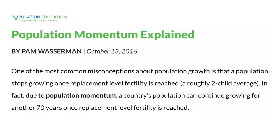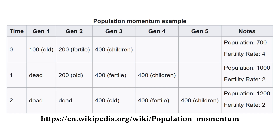One reason is population momentum. According to population education, one of the most common misconceptions about population growth is that a population stops growing once replacement level fertility is reached — a roughly two-child average. In fact, due to population momentum, a country's population can continue growing for another 70 years once replacement level fertility is reached. Here's an example from Wikipedia.